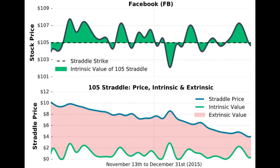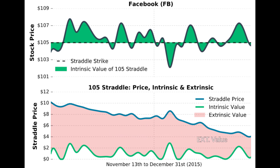In this next example we're looking at a straddle on Facebook with a strike price of $105. Facebook hovered around the $105 price level the entire time, and we can see how the extrinsic value in the straddle gradually melted away as time passed. This is perhaps the best example of time decay in action — with the stock price remaining right around the straddle strike price virtually the entire period, we see a very gradual decrease in the value of those options as time passed.